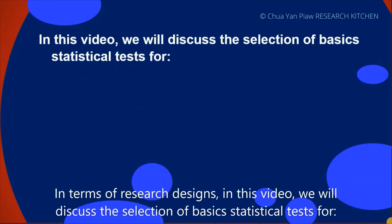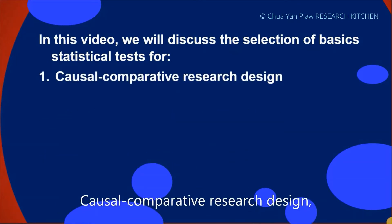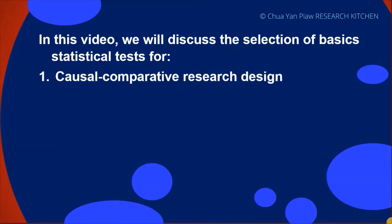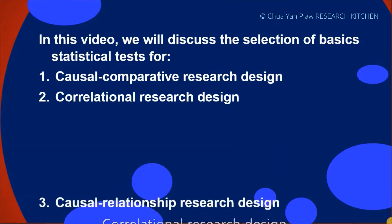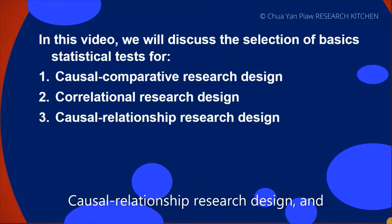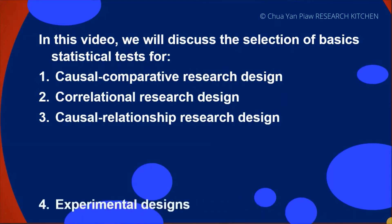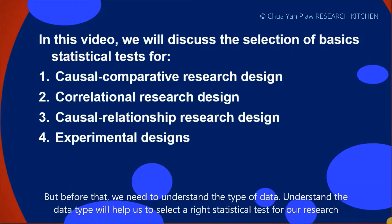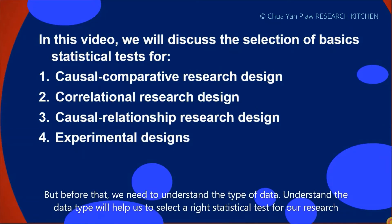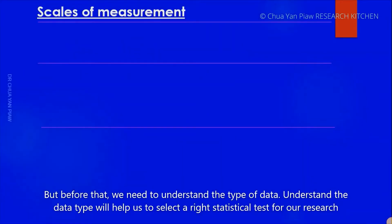In terms of research design, in this video we will discuss the selection of basic statistical tests for causal comparative research design, correlational research design, causal relationship research design, and experimental designs. But before that, we need to understand the type of data, as understanding the type of data will help us select the right statistical test for our research.